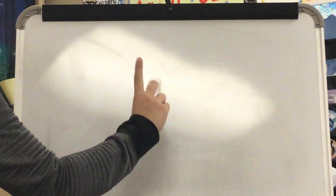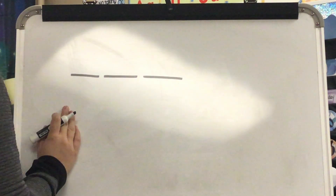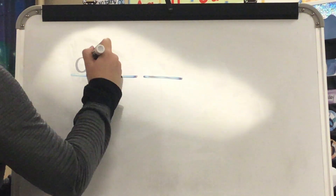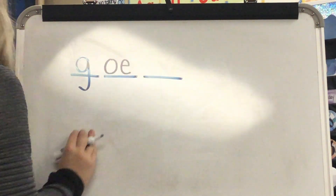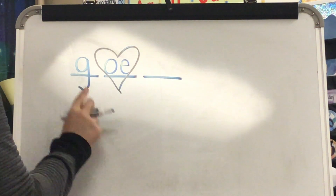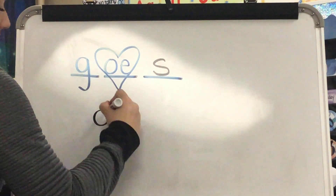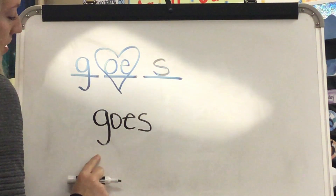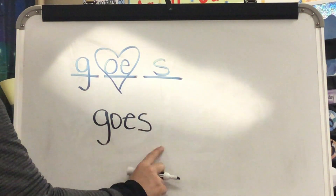Our next heart word is the word goes. What word? Goes. Stretch goes: G. O. S. What is the first sound you hear in goes? G. Yes. Next sound is O. O in goes is spelled O-E — that's a tricky part of goes you have to know by heart. Final sound: S. Yes. This is the word goes. What word? Goes. Spell goes: G. O. E. S. Yes, goes.